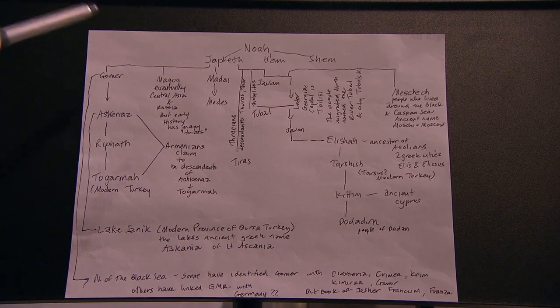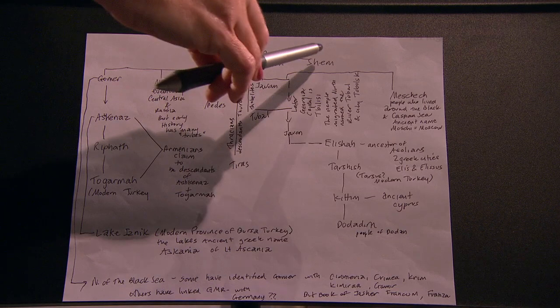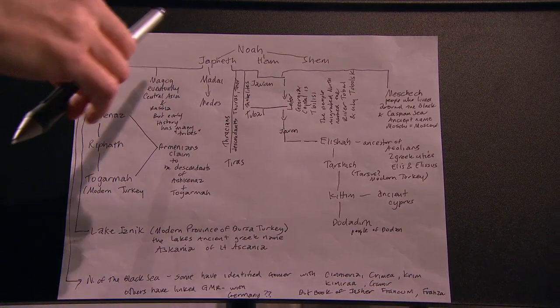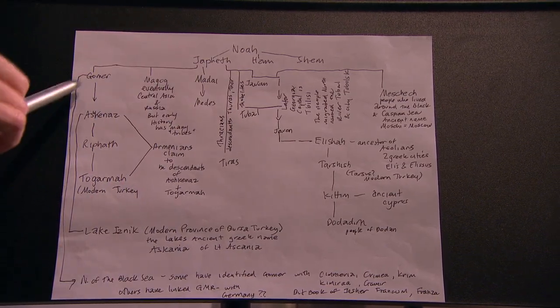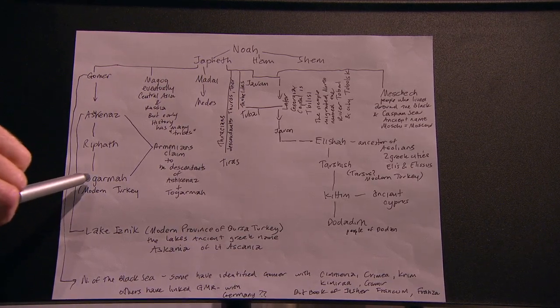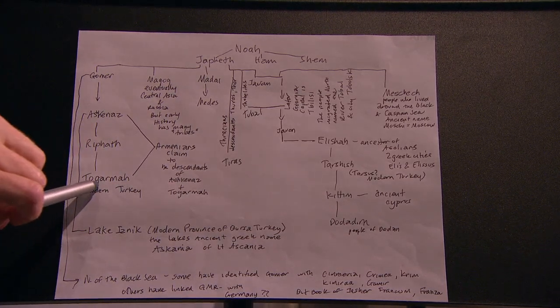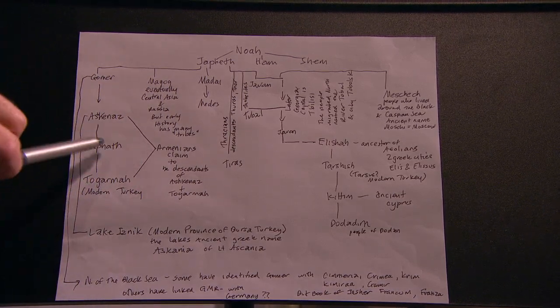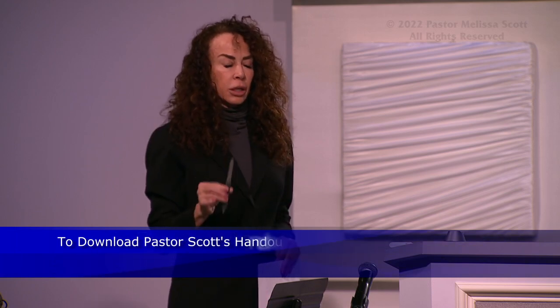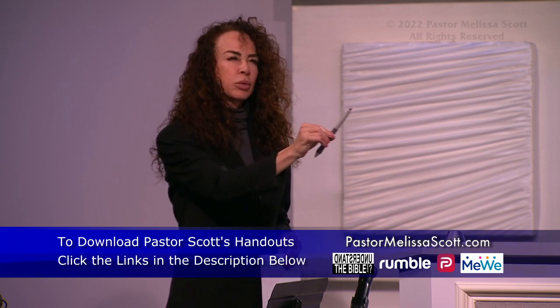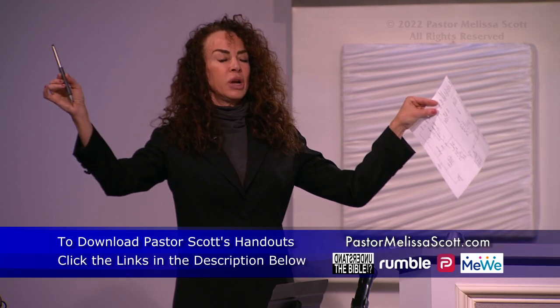This is not the prettiest diagram — maybe my staff will make it a little prettier. This is only the line of Japheth here, with Ham and Shem noted over here. From Japheth you can see the descending line: Gomer, Ashkenaz, Riftah, Tagomar. These people — especially Ashkenaz and Togarmah — are those from whom Armenians claim descent. This is the line of Japheth. The line of Shem is the line that basically the Bible is most concerned with. What God's concern will ultimately be with is the line of Shem.